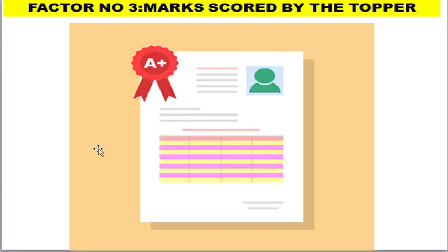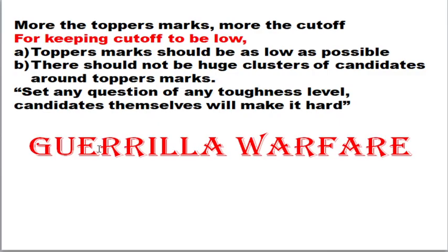The next factor is the marks scored by the topper. The higher the topper's mark, the higher the cutoff will be. For the cutoff to remain low, the topper's mark should be as low as possible and there should not be a huge cluster of candidates around the topper's mark.